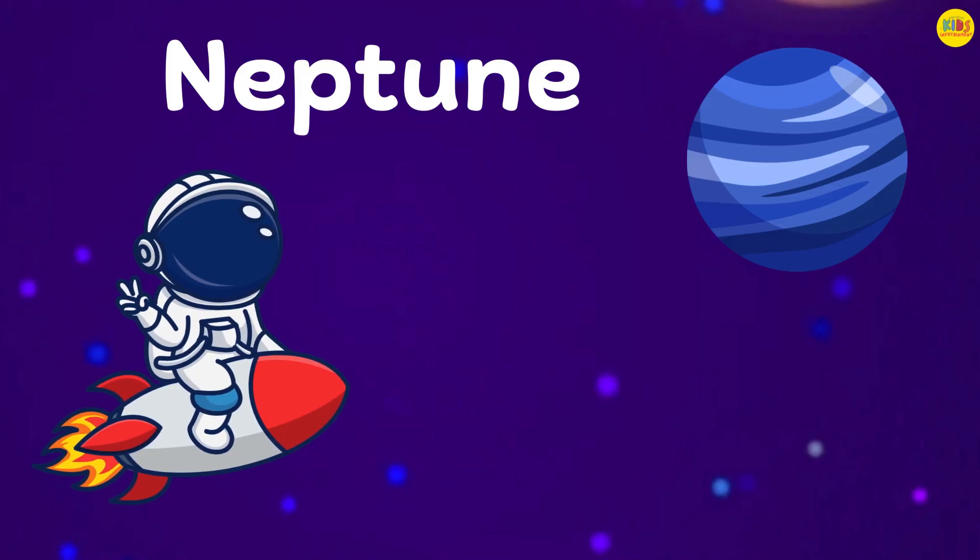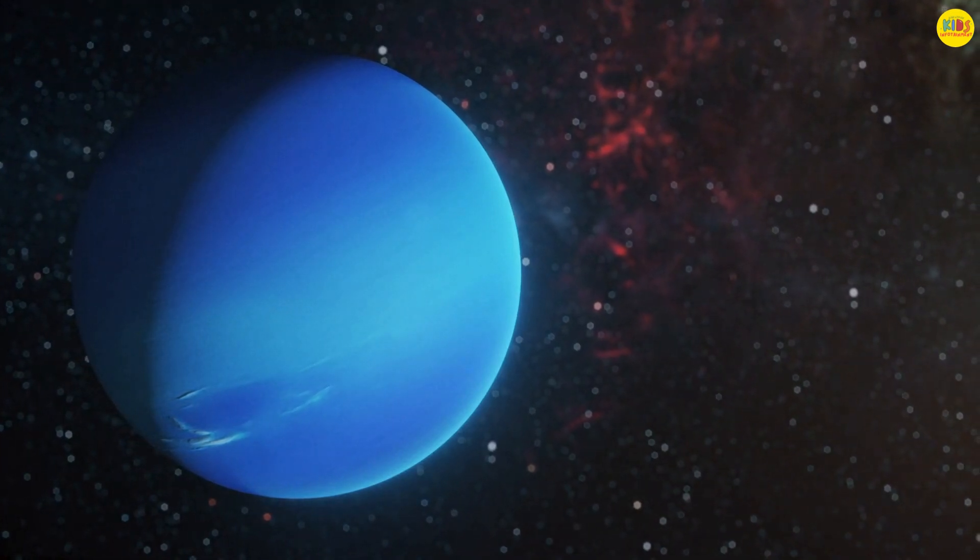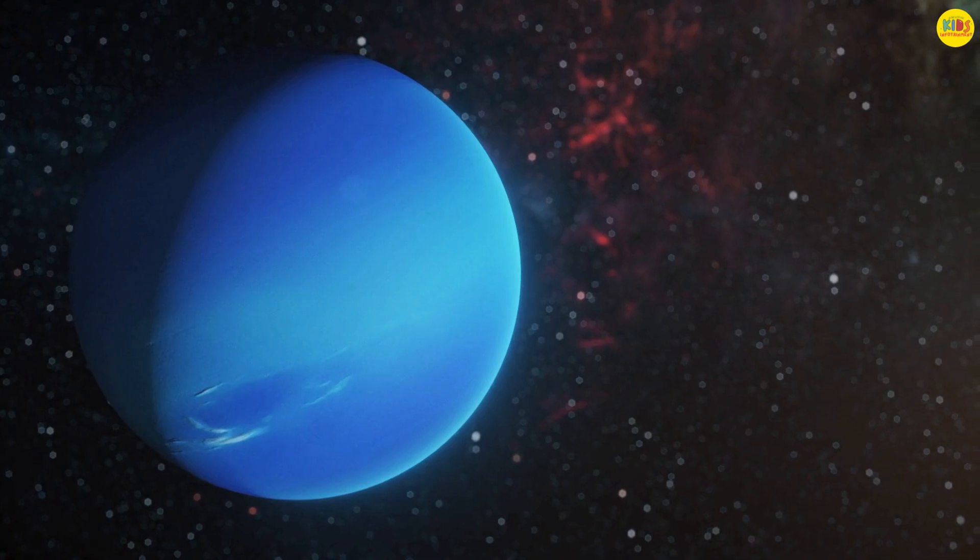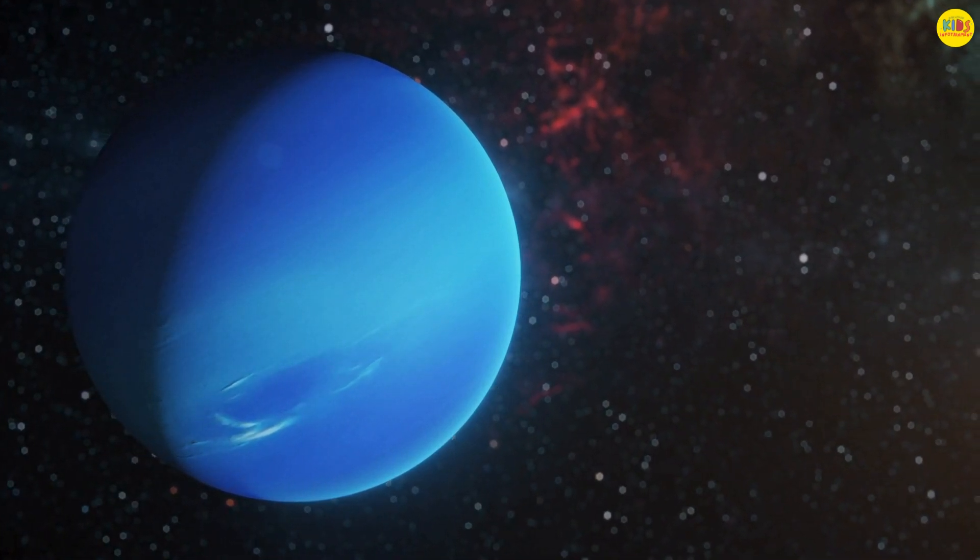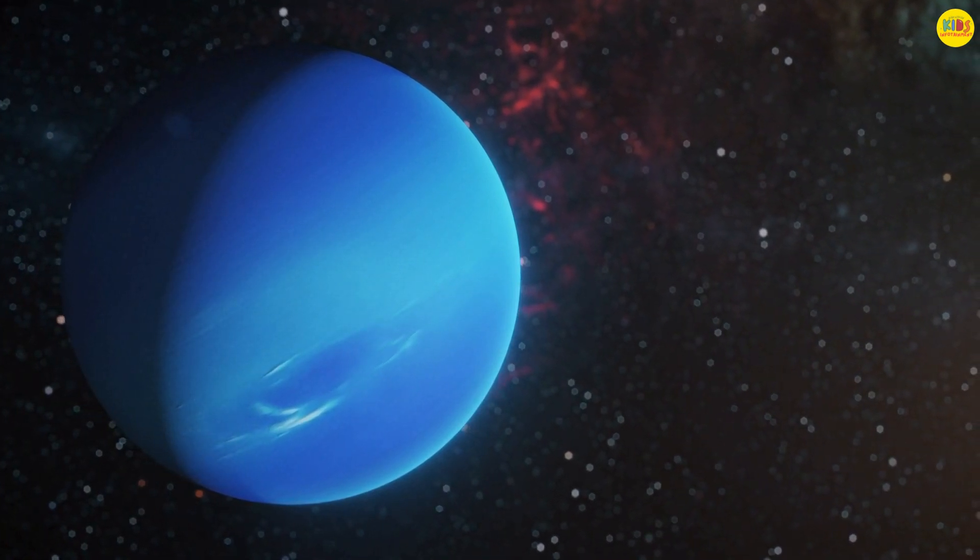Last but not least, Neptune. Neptune is super far from the sun and is one of the windiest places in our solar system. It's a beautiful blue color, just like the ocean, but it's made of gas and ice.